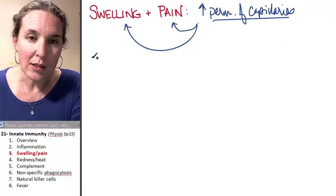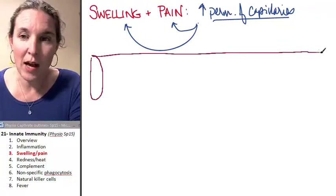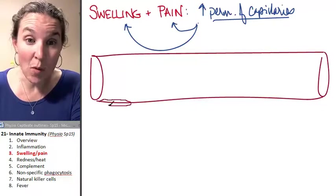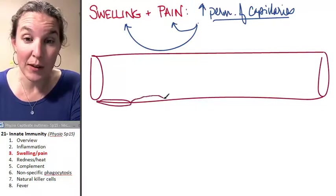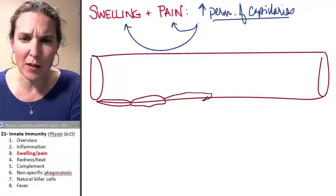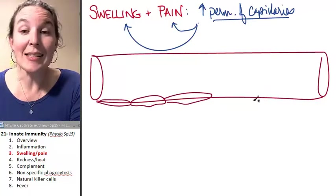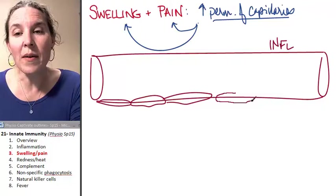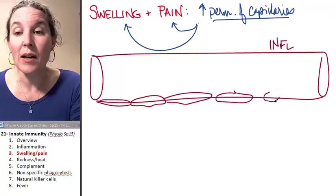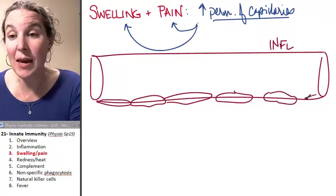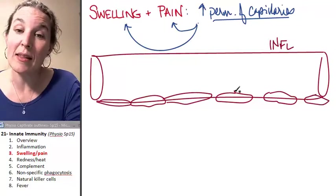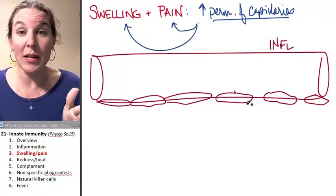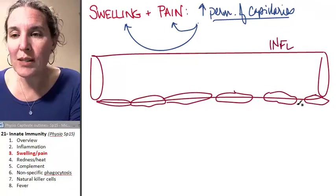All right, let's go ahead and draw ourselves a capillary. And remember that the capillary wall is nothing more than simple squamous epithelium. These are my simple squamous epithelial cells. And let's say inflammation happens on this end. And all that means is that if an inflammatory cytokine is just going to make the spaces between the endothelial cells in my capillary, they're just going to be more spaced apart.